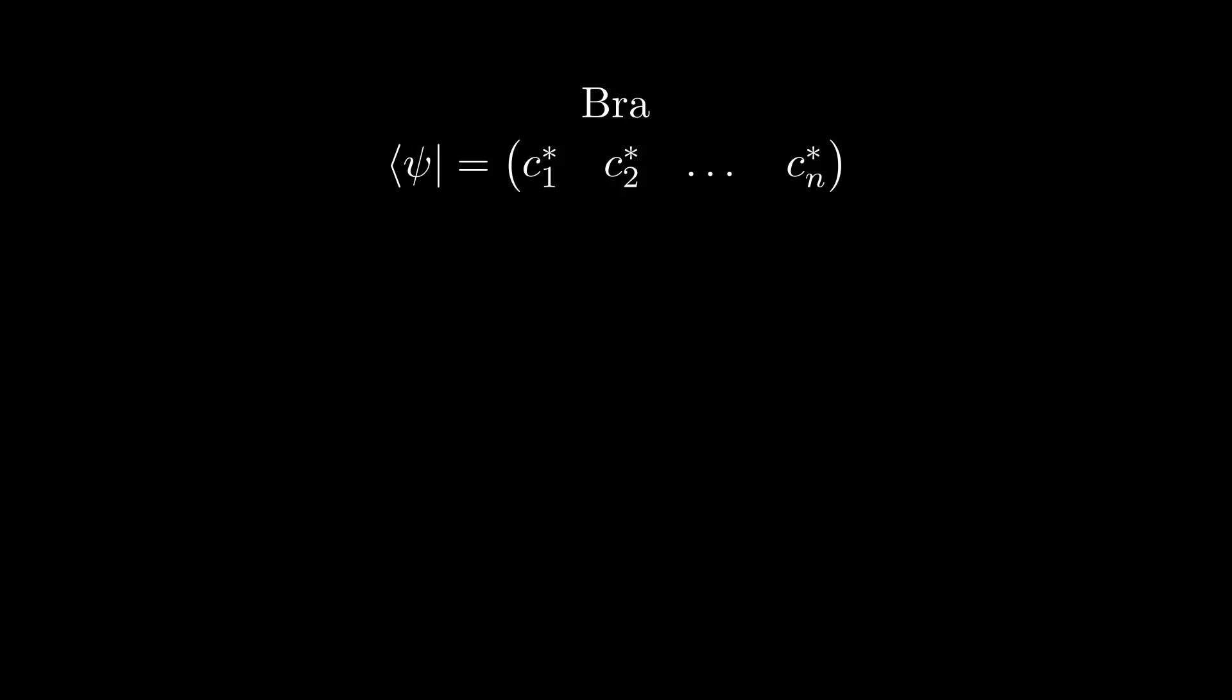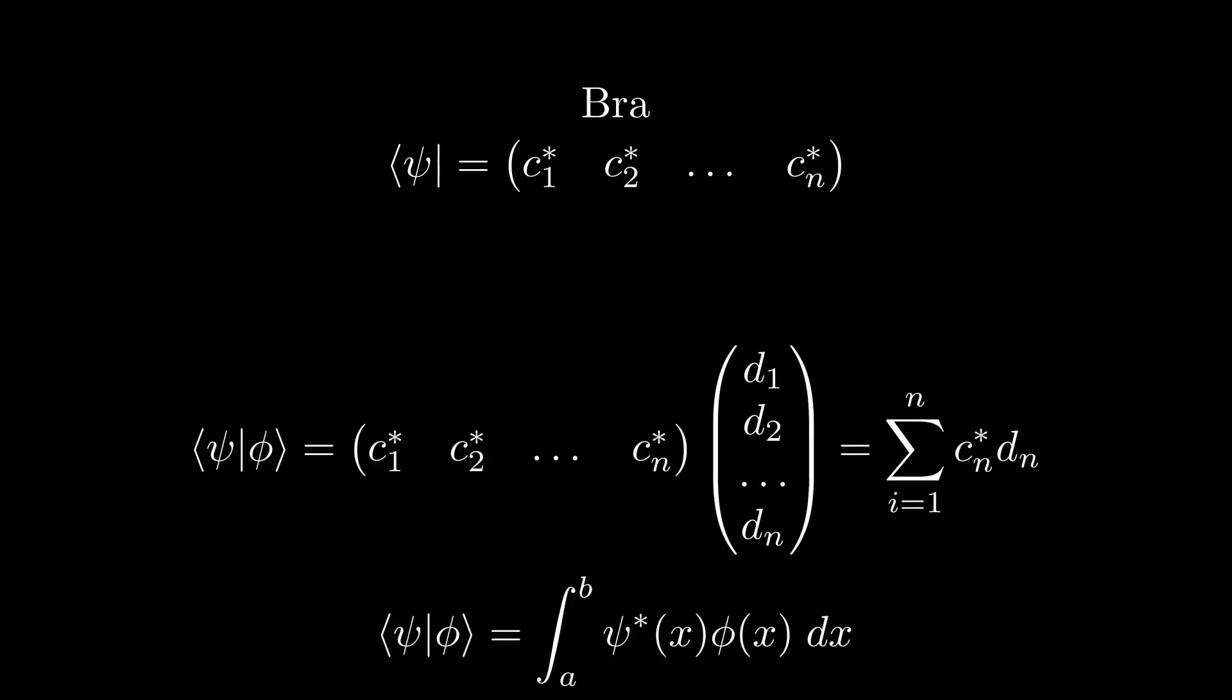However, for infinite-dimensional Hilbert spaces, this definition is a little bit more involved. To understand how we can arrive at this definition, we first note that Bras and kets can be combined to form an inner product as follows. In the finite-dimensional case, we simply get the product of a row and column vector, which just amounts to a Euclidean or lowercase l2 inner product. However, for the continuous case, this becomes a capital L2 inner product, given by the following integral.